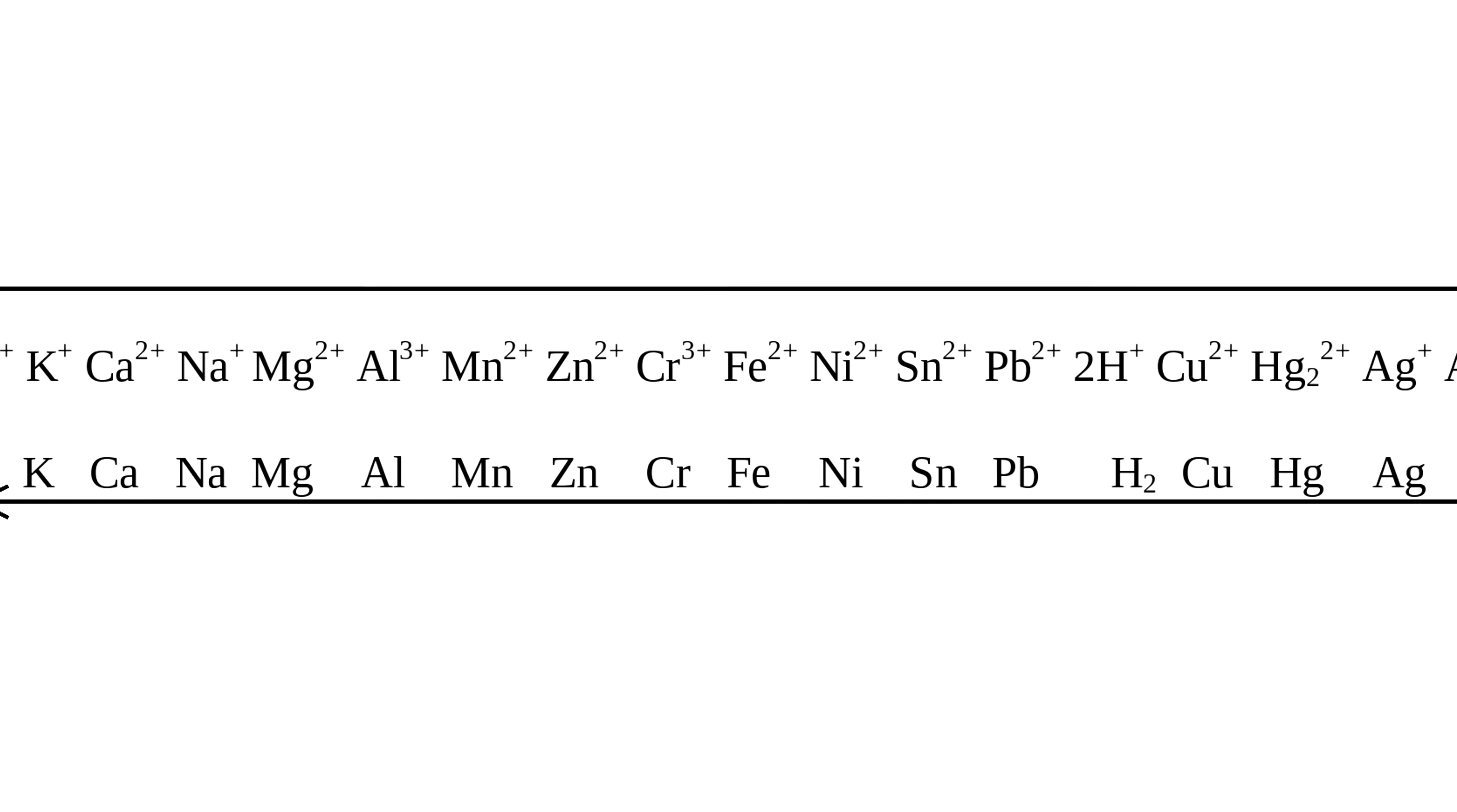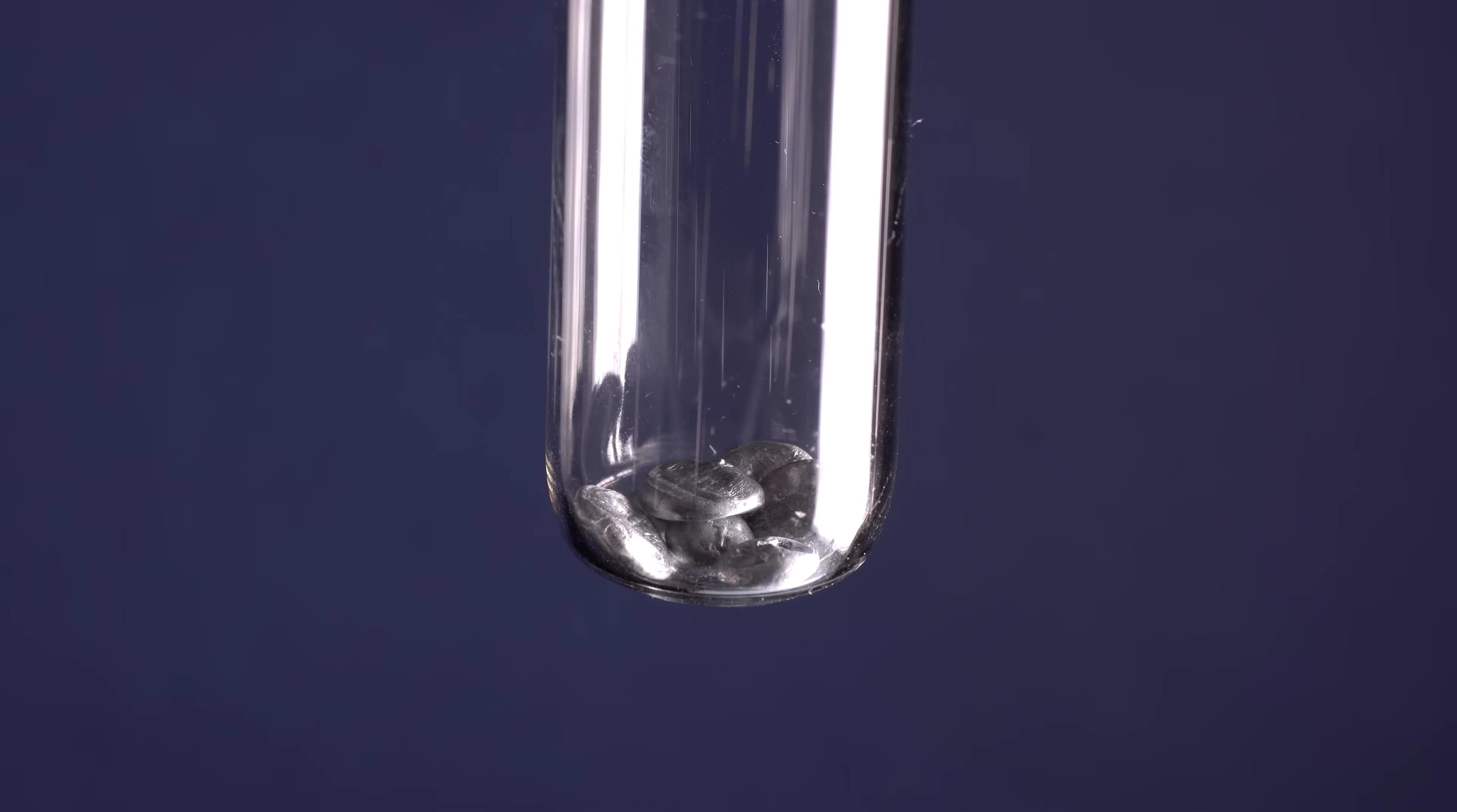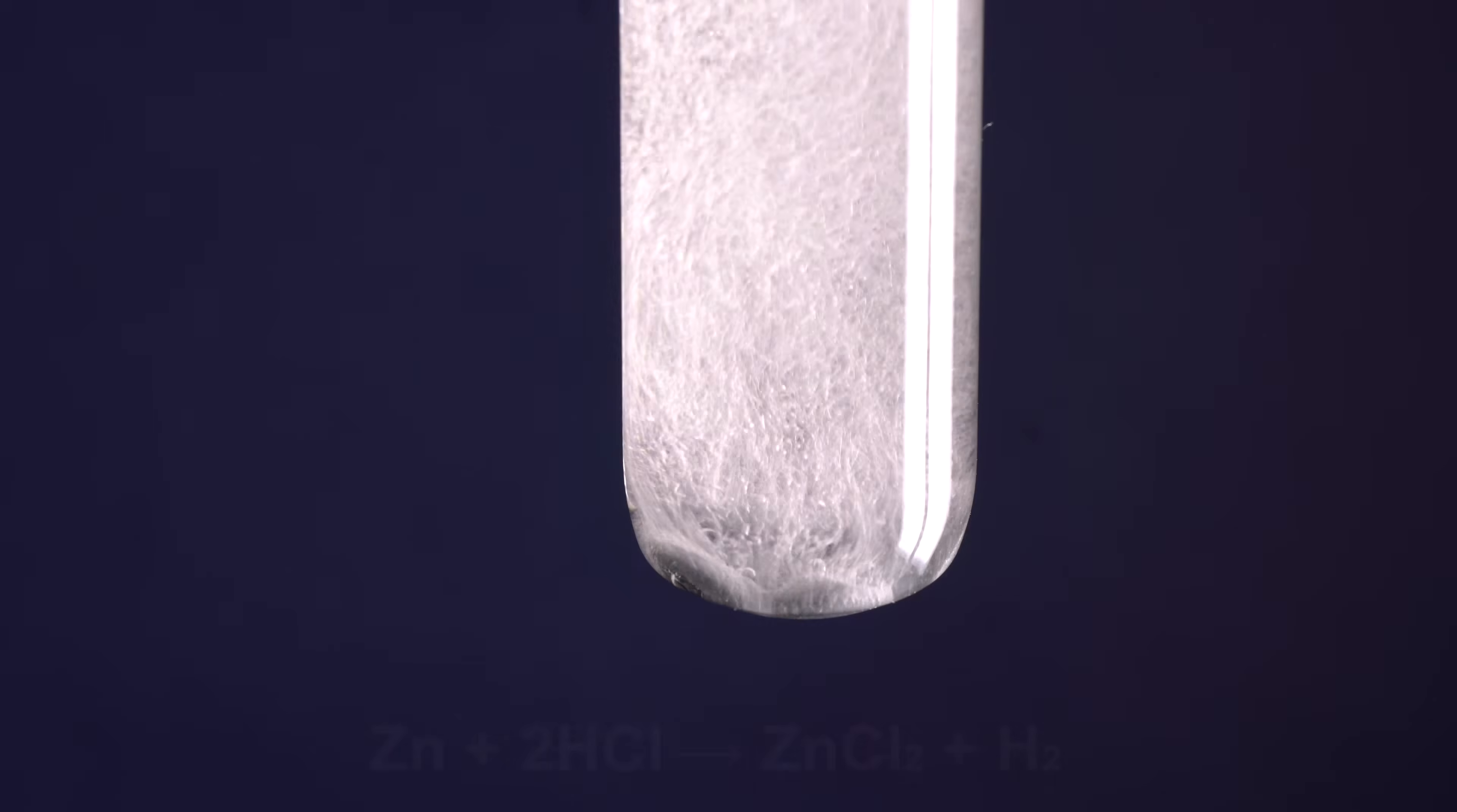As I mentioned earlier, zinc is a quite active metal following aluminum in the reactivity series. Zinc actively reacts with hydrochloric acid releasing a lot of hydrogen and forming zinc chloride.